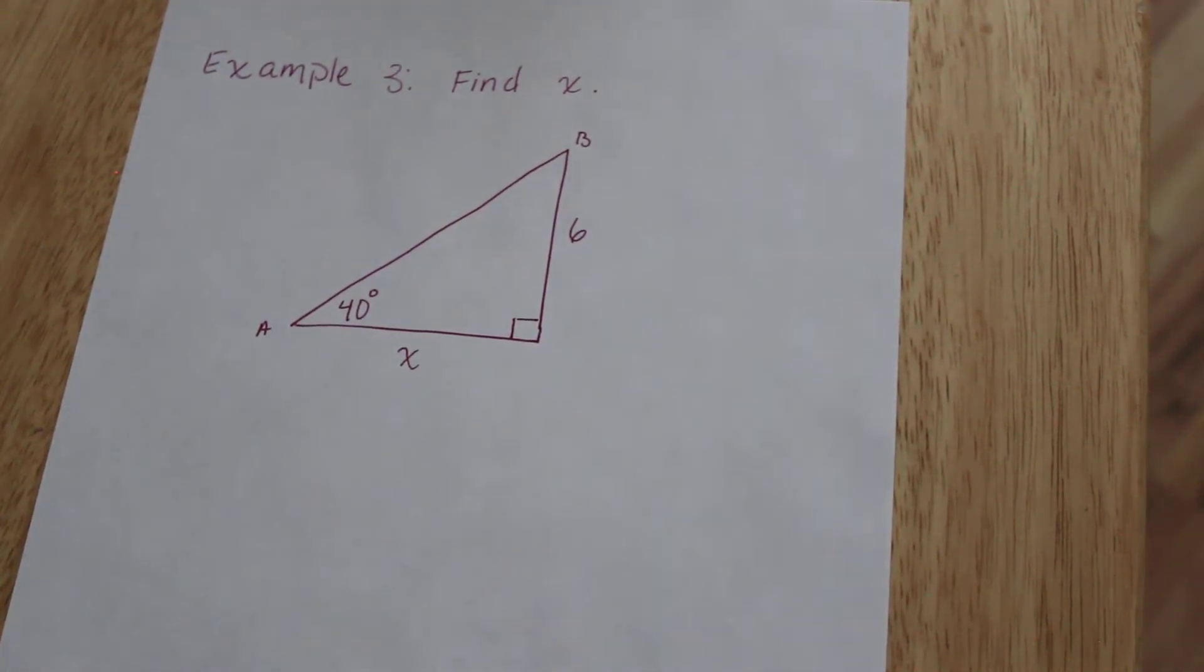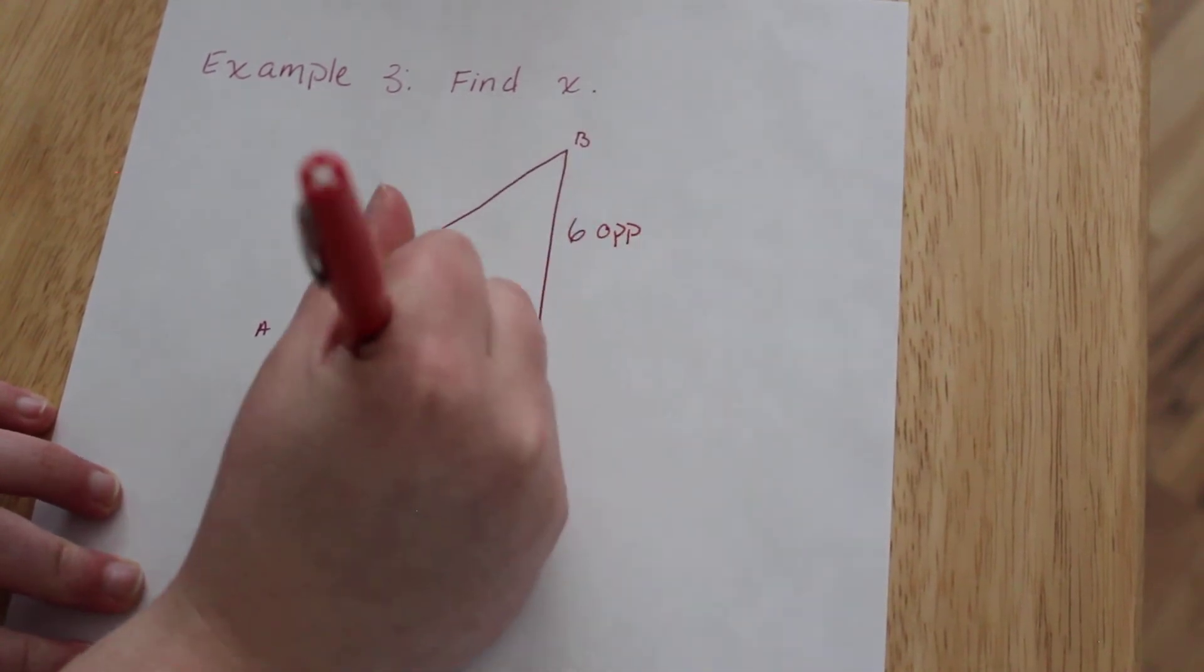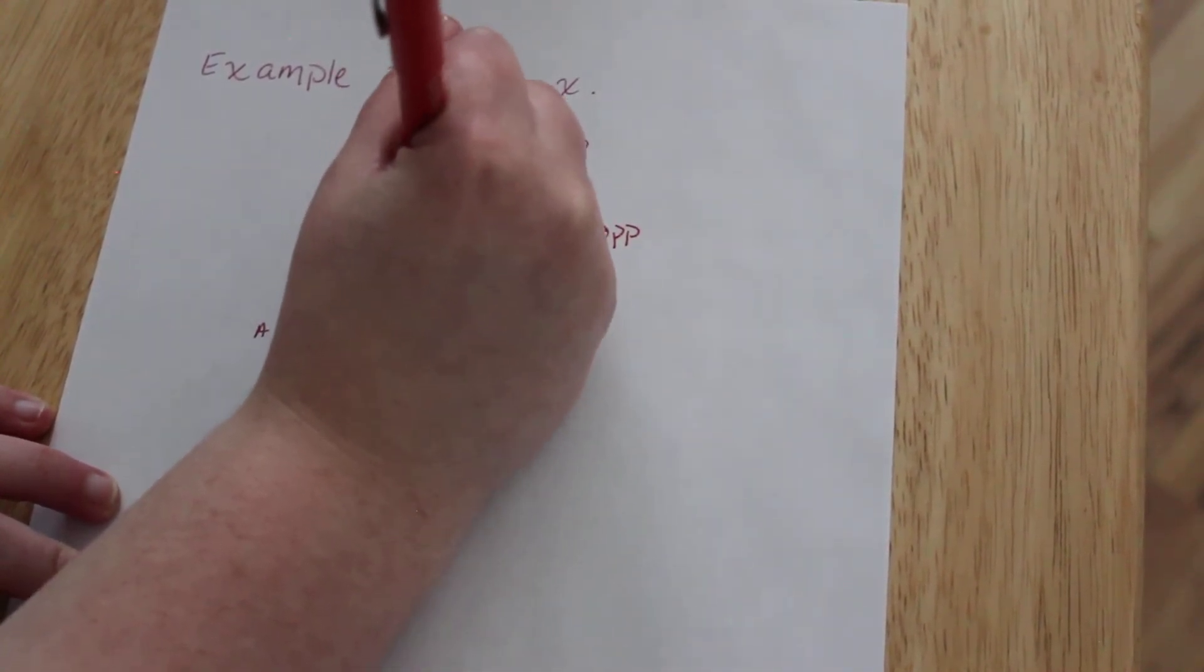For this next example, it's very similar to the last one that we did. We're going to be finding x. Before I do that, I want to label my sides, so let's do that super quickly. This is opposite my given angle, this is adjacent, and this is the hypotenuse.